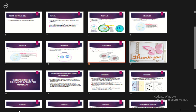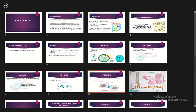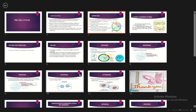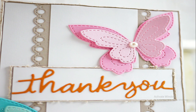So we have completed the cell cycle. To conclude: interphase consists of G1 (growth in size and volume), S phase (DNA replication from 46 to 92 chromosomes), and G2. The M phase — mitosis — has four processes: prophase, metaphase, anaphase, and telophase, resulting in two identical daughter cells. Please post any doubts in the comments section, and you can revise this topic using the slides posted on the blog website.